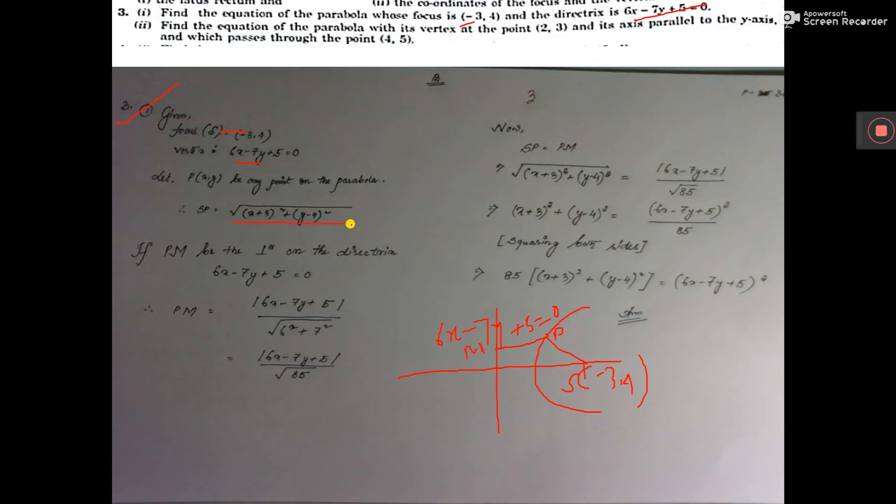Now apply the distance formula for sp. And for pm, I told you how to calculate. On the left-hand side, you write the denominator as square root of 6² plus (-7)².